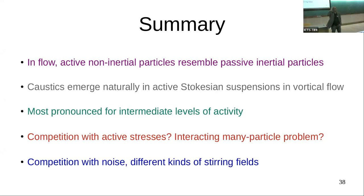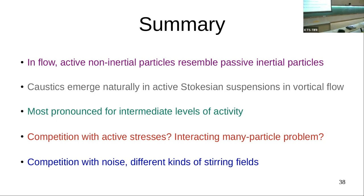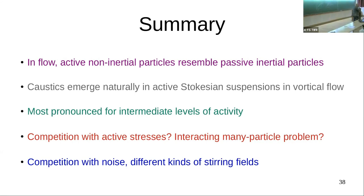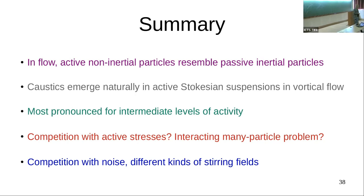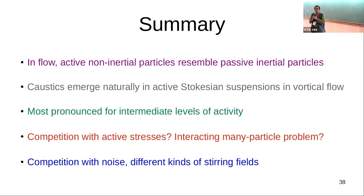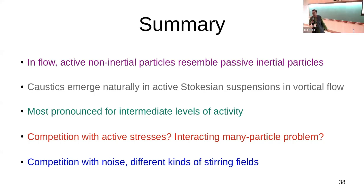Final question: what would happen with the history term — the 1/sqrt(t - tau) memory term — that was not present in the model? Answer: I'm not going to commit to what I'd need to do to this model to get a Basset history term; I don't want to worry about the real inertia of the particle. It'd be interesting if it came out without real inertia, but I'm hitting a blank on that right now. Thank you all for a very nice talk — let's centrifuge out and cluster near lunch, and come back at 2:40.